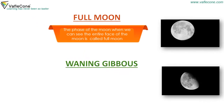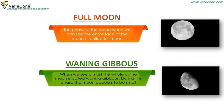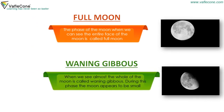Waning Gibbous: The phase of the moon when we can see almost the whole of the moon is called waning gibbous. During this phase, the moon appears to become smaller.